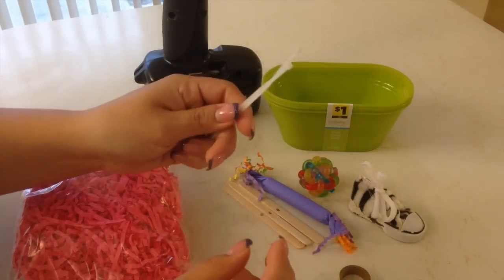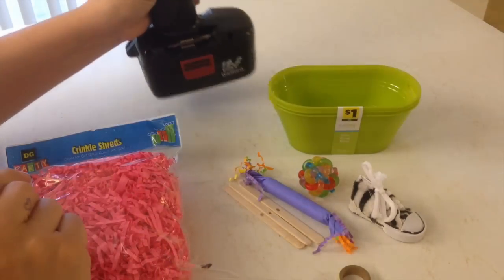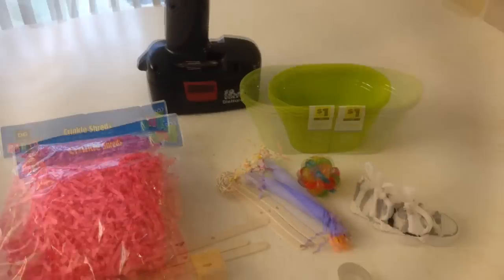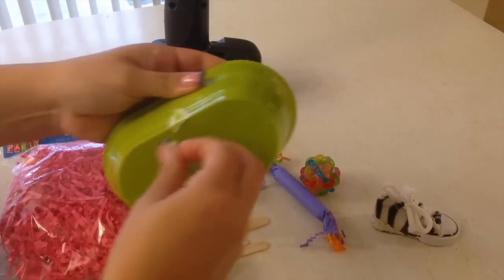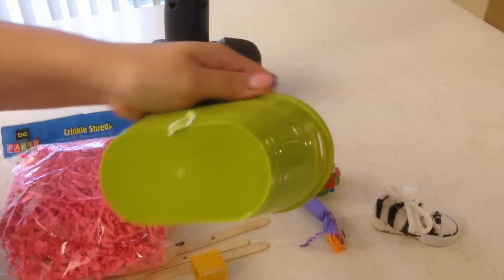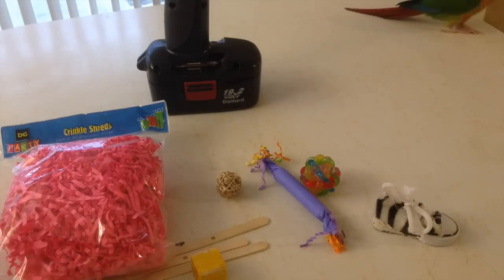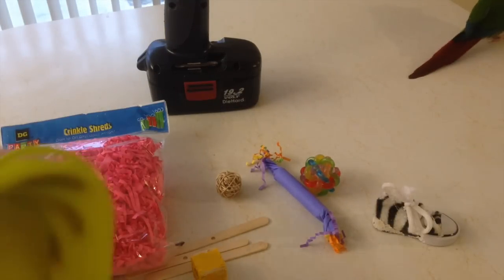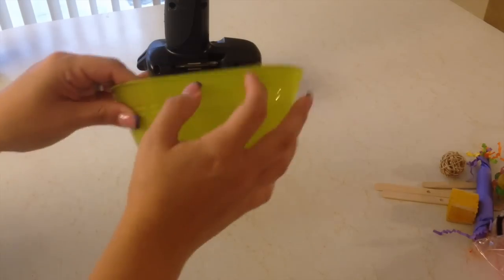You're also going to need two zip ties and you're going to need a drill. Okay let's get started. The first thing you're going to want to do is take apart your little baskets or just get your one basket ready to be used. So I'm only going to need one basket and you want to start drilling your holes in it. And I'm just going to drill two holes on the side here because I'm going to attach it to the bottom of her cage. I just want to make sure that she can't knock the little thing over.